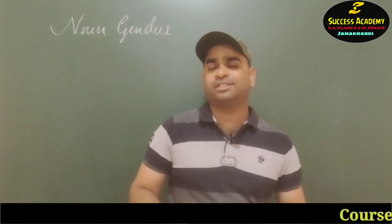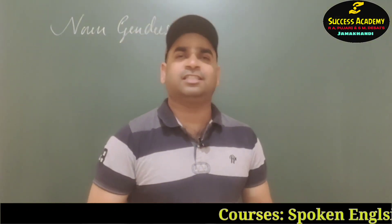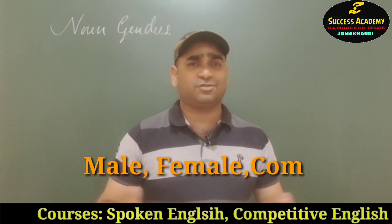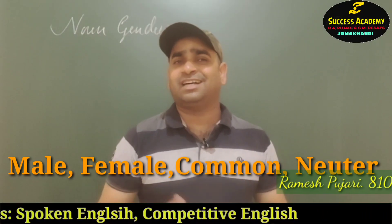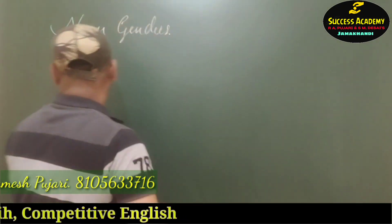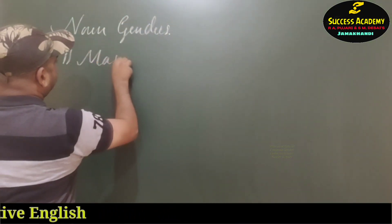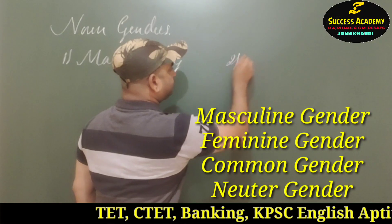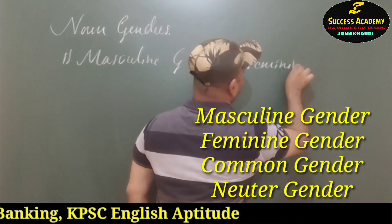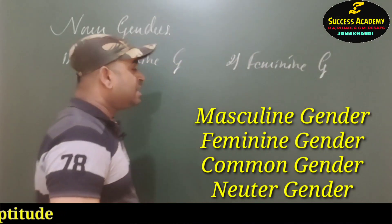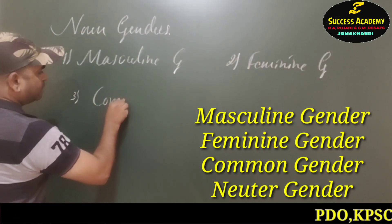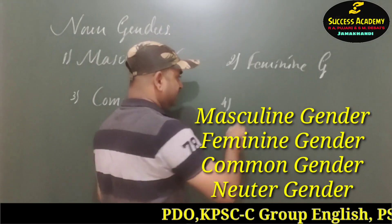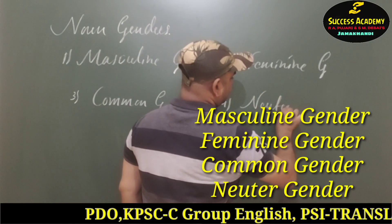Dear students, do you understand what we mean by gender? Gender is nothing but dividing the nouns as per male, female, common, and neuter. The four types of noun genders are: the first one is masculine gender, the second one is feminine gender, the third one is common gender, and the fourth one is neuter gender.